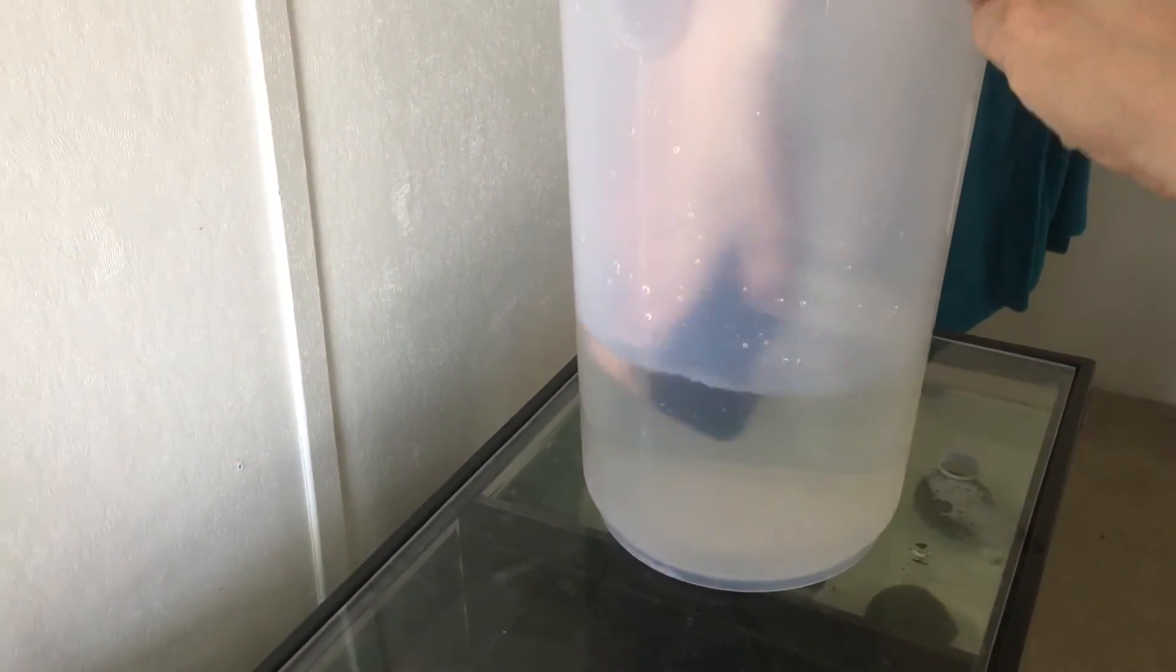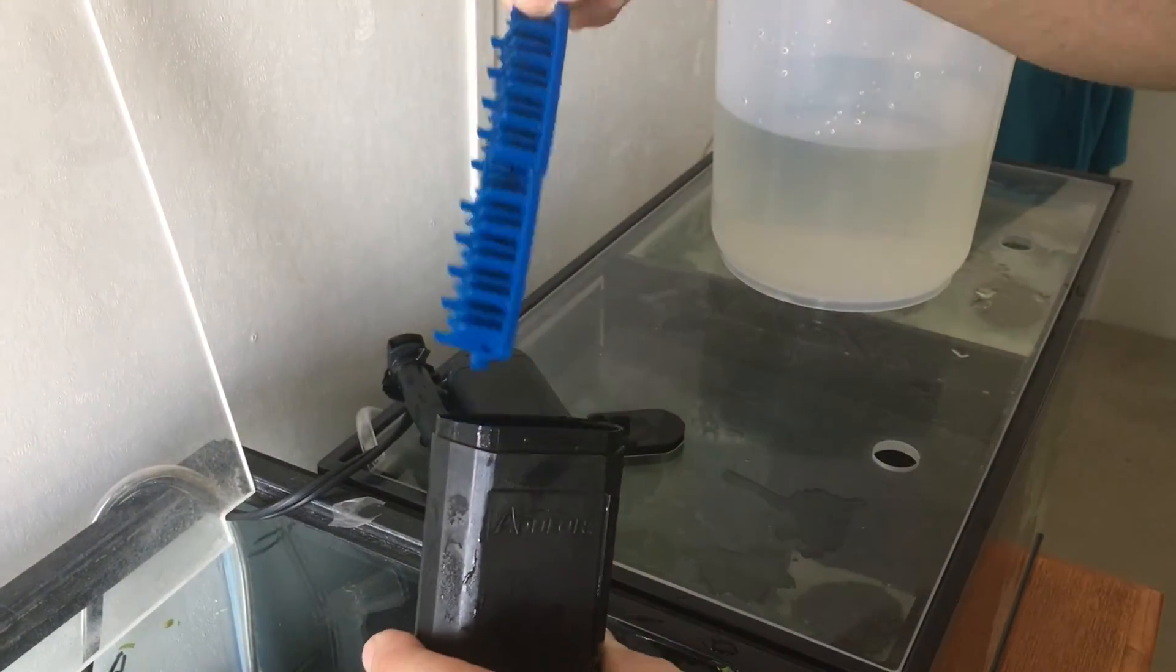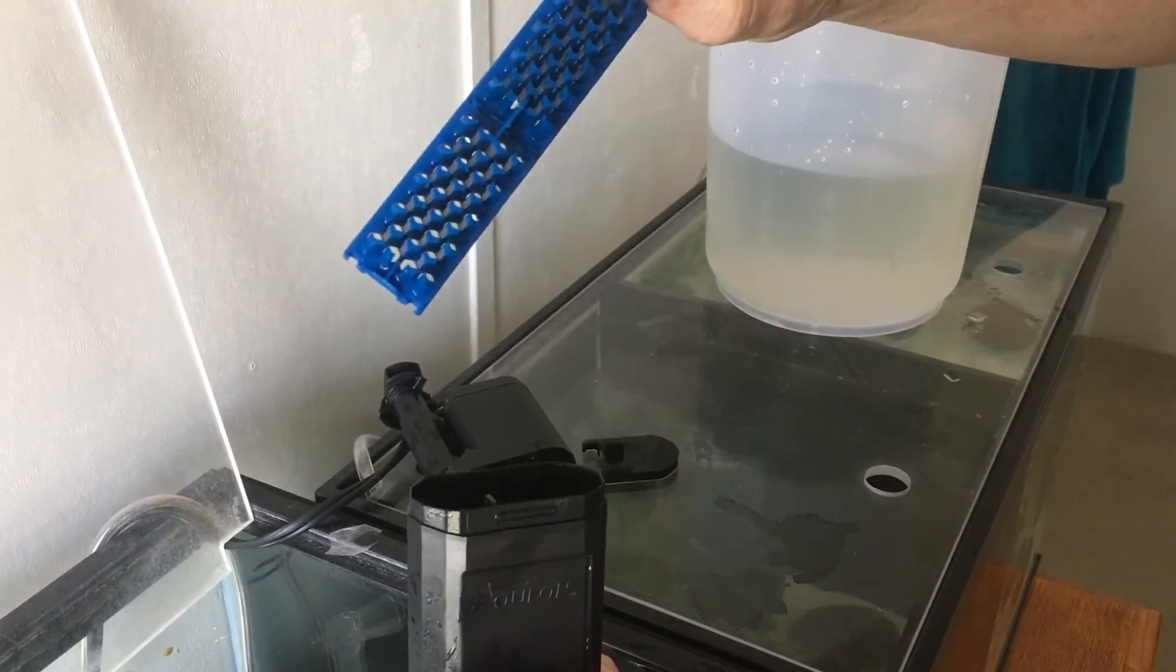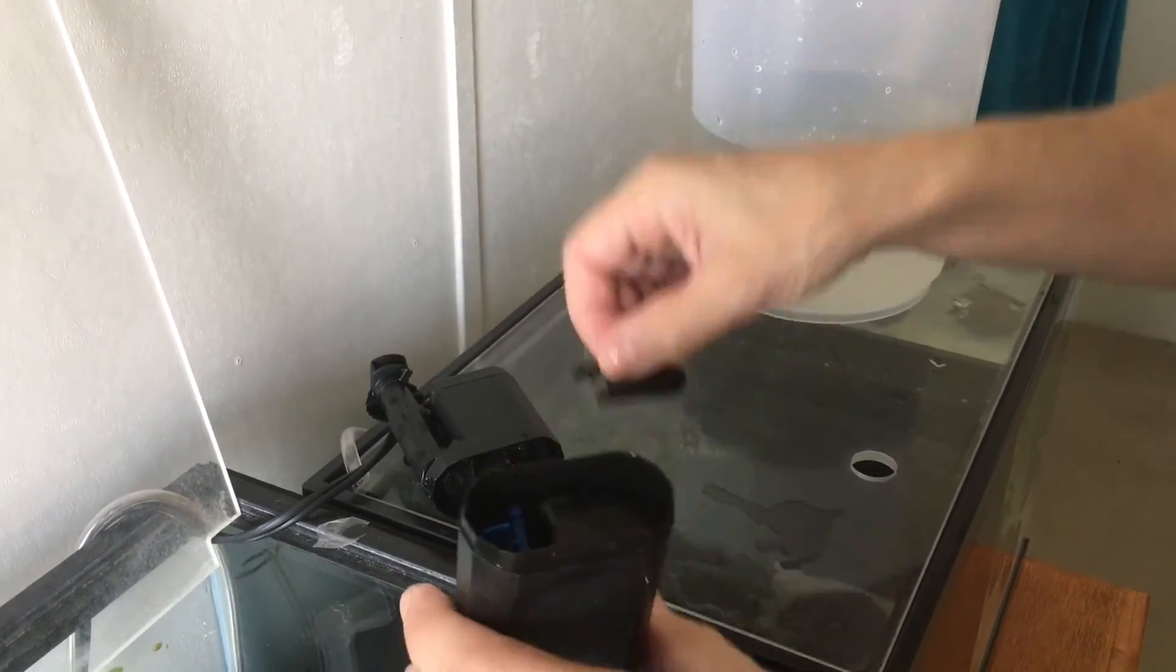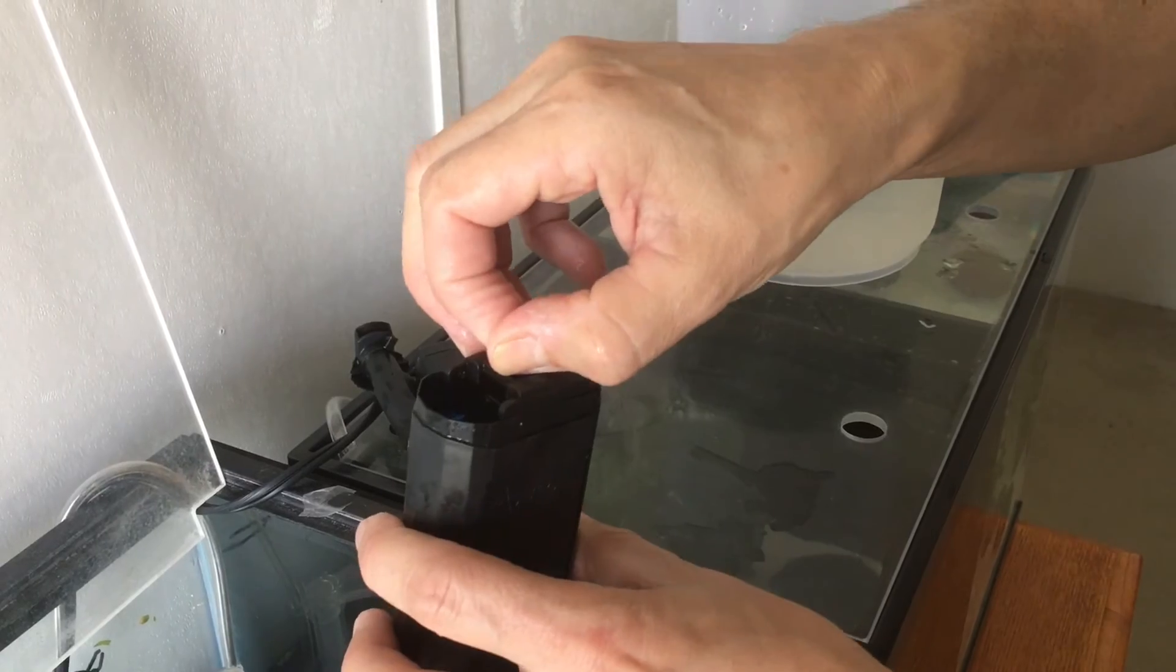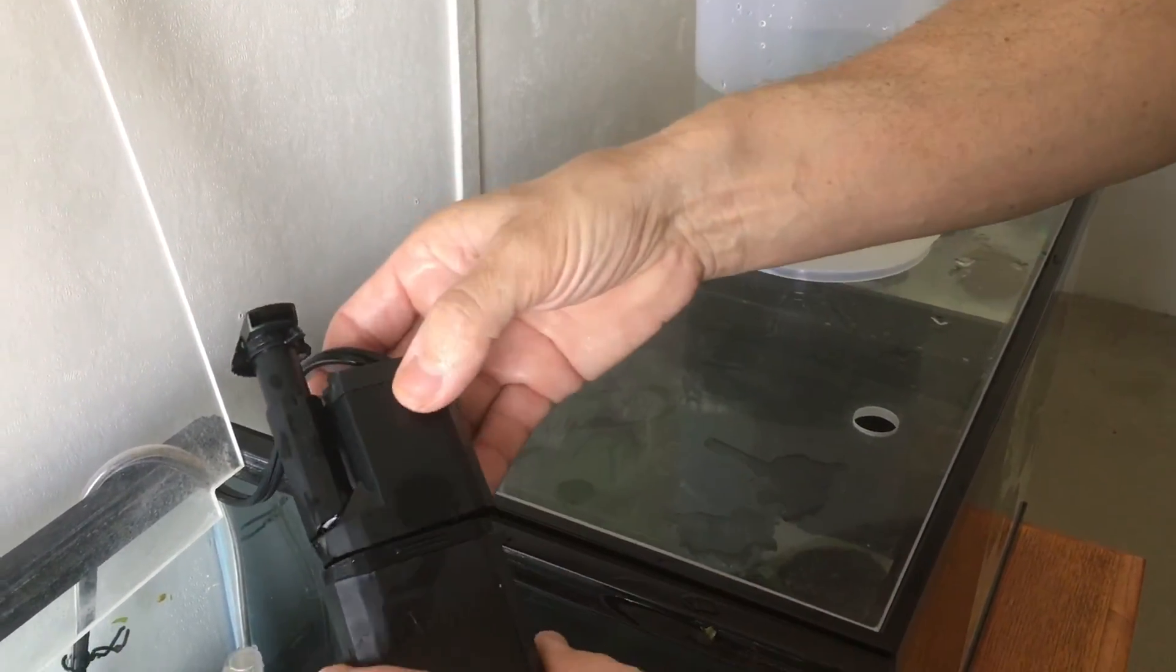You will then put the cartridge back into the filter. The biogrid, we have not actually needed to rinse that yet, but if you do want to rinse it out then again just make sure that you use aquarium water. You then just put the filter back together and put it back in your tank.